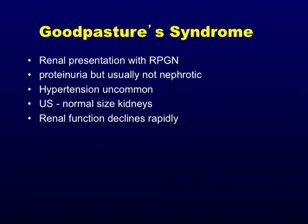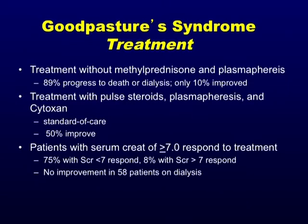Linear staining on immunofluorescence — there's only one cause of linear staining you'll see in the boards: Goodpasture syndrome. It presents with RPGN and proteinuria, but usually not nephrotic. Hypertension is also not common — there isn't enough time. Renal function declines rapidly. Treatment is a medical emergency: without methylprednisolone and plasmapheresis, 89% of patients progress to death or dialysis. With plasma exchange and cyclophosphamide, there's 50% improvement. Patients with creatinines greater than 7 with advanced disease don't do well, but we treat them anyway.